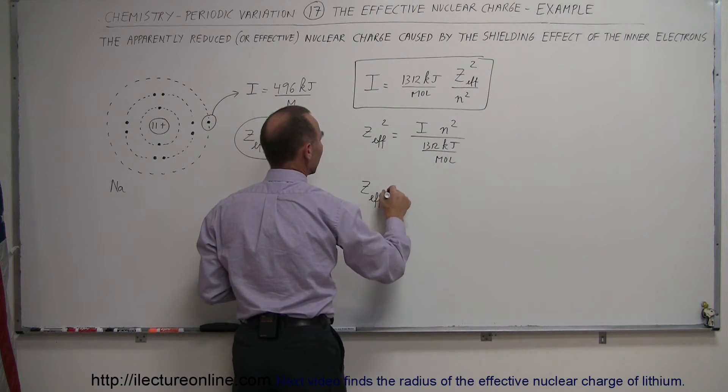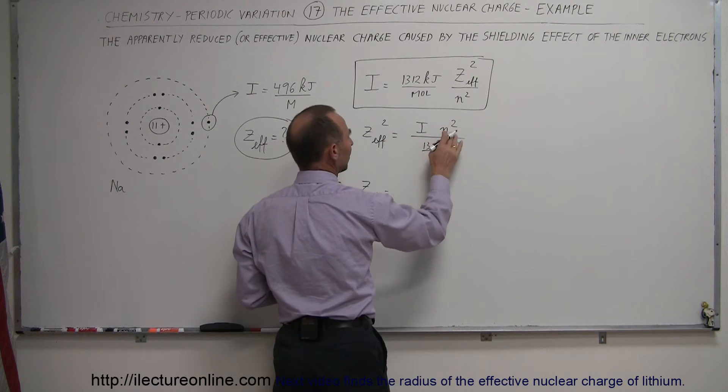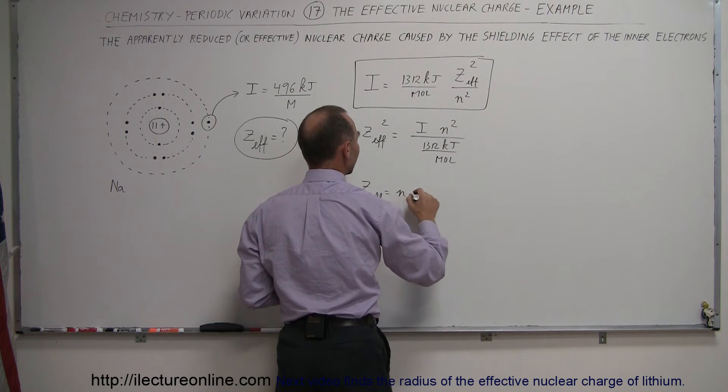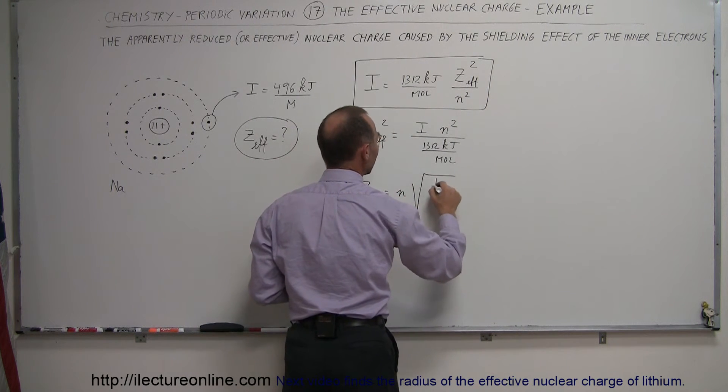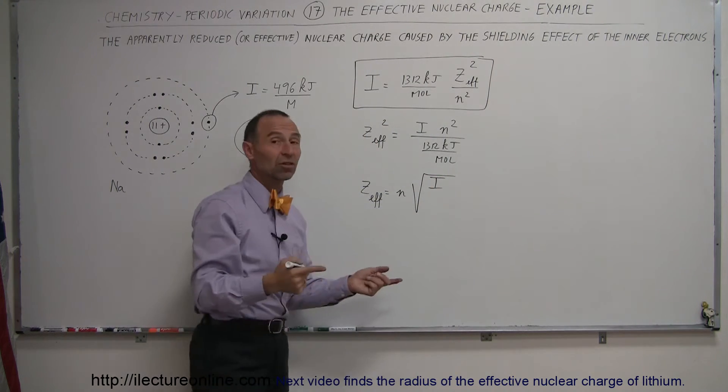So Z-effective is equal to, I can bring the N in the front because I can take the square root of that. So it's N times the square root of the ionization energy measured in this case.